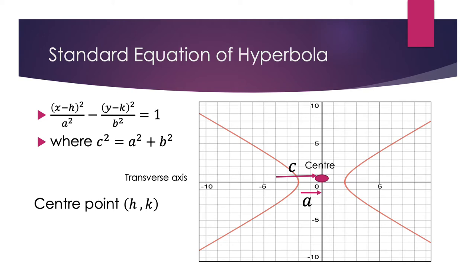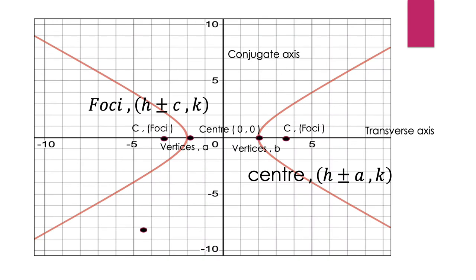For this graph sketching, the center is at (0, 0), so h equals 0 and k equals 0. Now we can plot the points for the vertices and foci. The coordinates for the vertices are (h ± a, k).